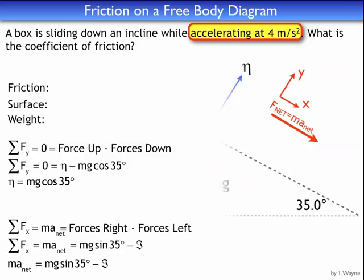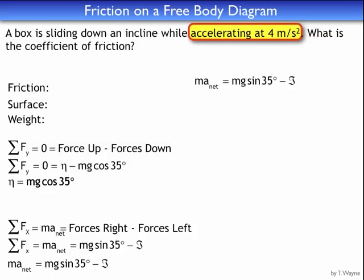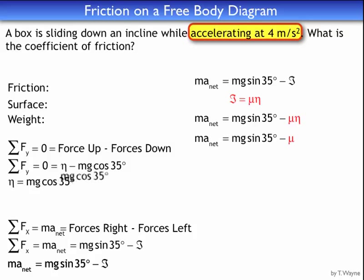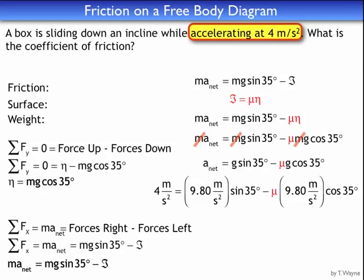I'm still looking for the coefficient of friction, so I start with the MA net equation. Friction equals mu times N (the normal force), and that's my coefficient of friction. So MA net equals mg sine 35 minus mu times N. I replace N with mg cosine 35, giving: MA net equals mg sine 35 minus mu mg cosine 35. There's an M everywhere, so it divides out, leaving: A equals g sine 35 minus mu g cosine 35. Plugging in numbers: 4 m/s² equals 9.8 sine 35 minus mu times 9.8 cosine 35.